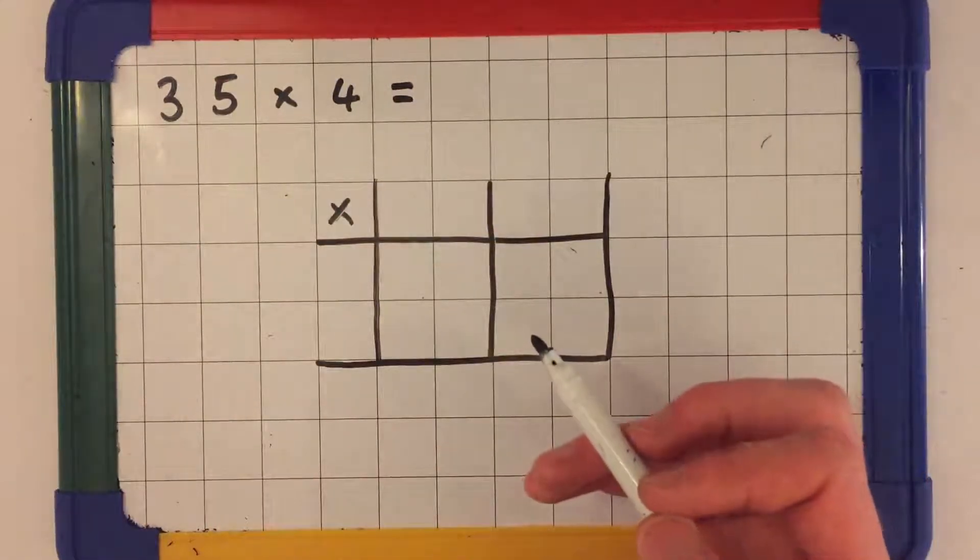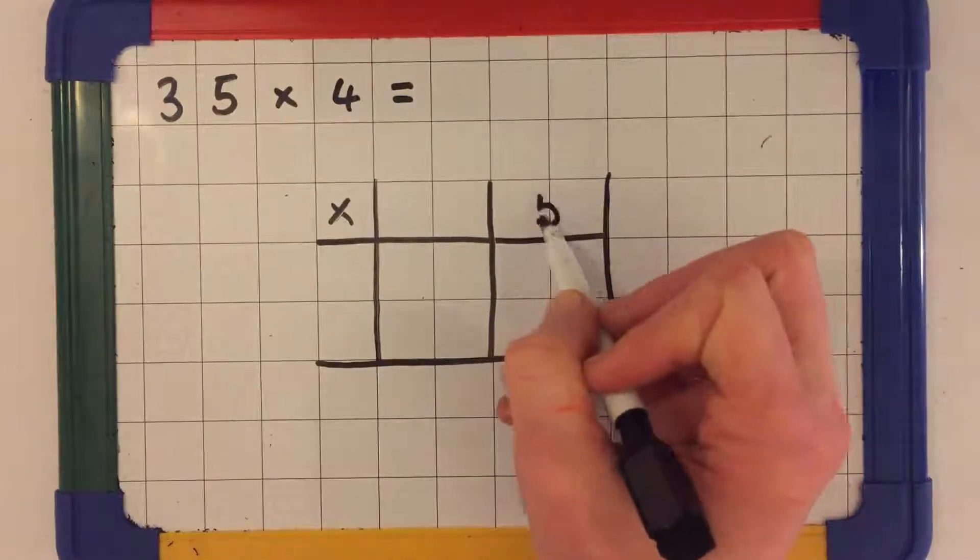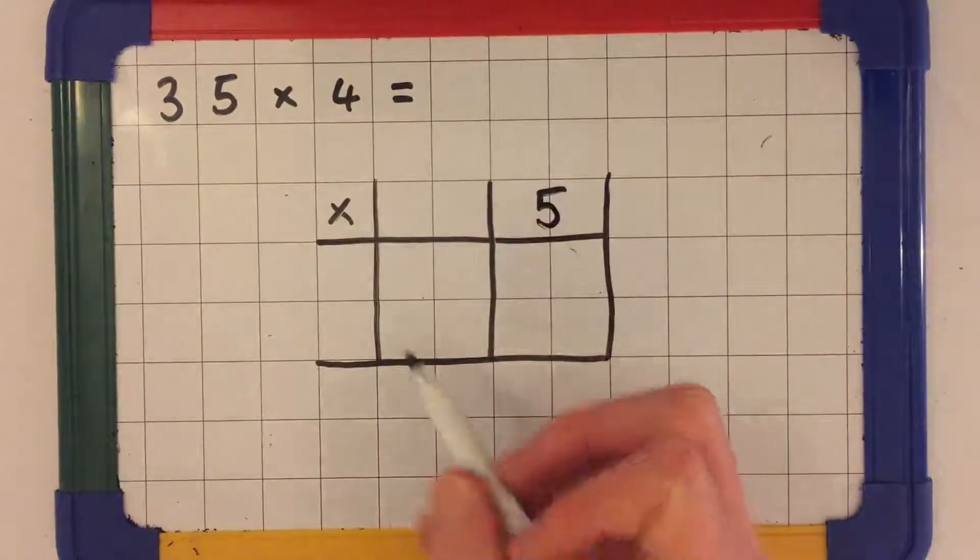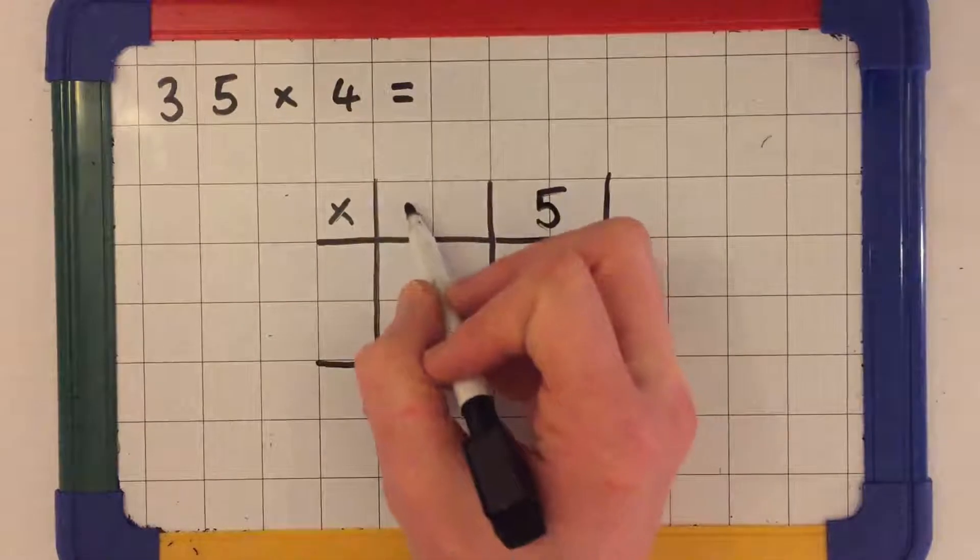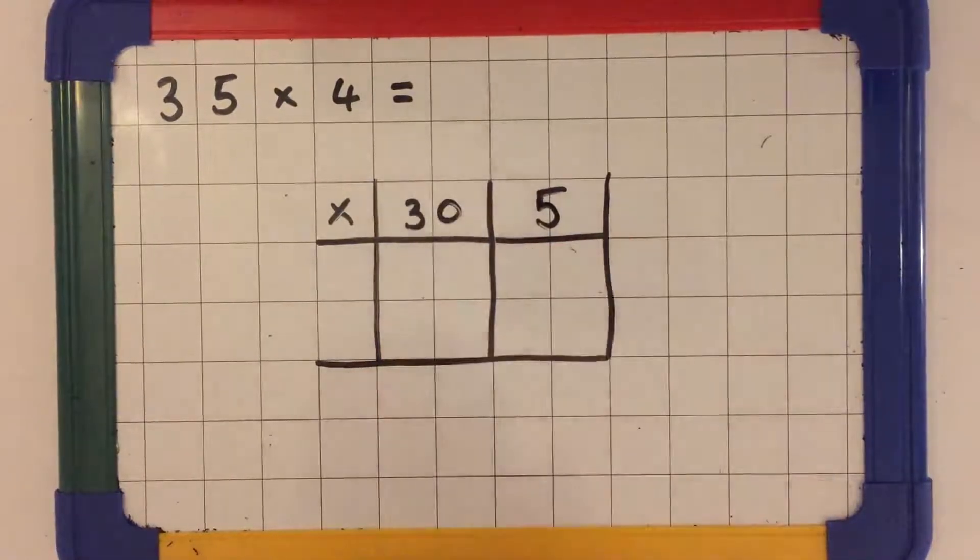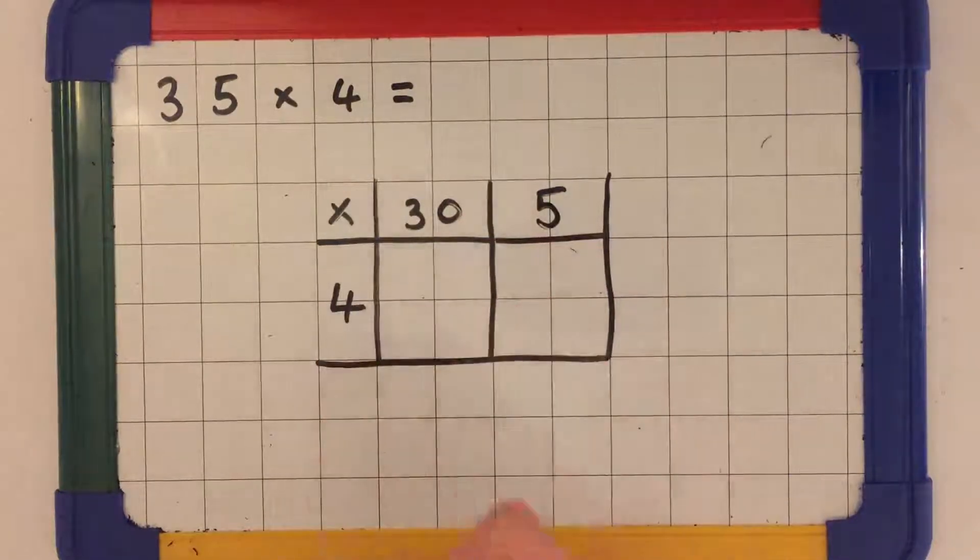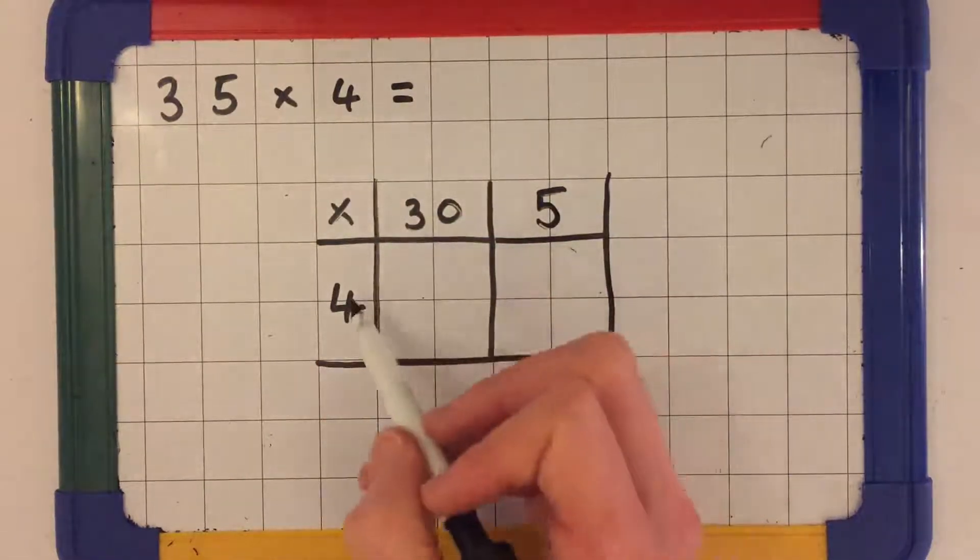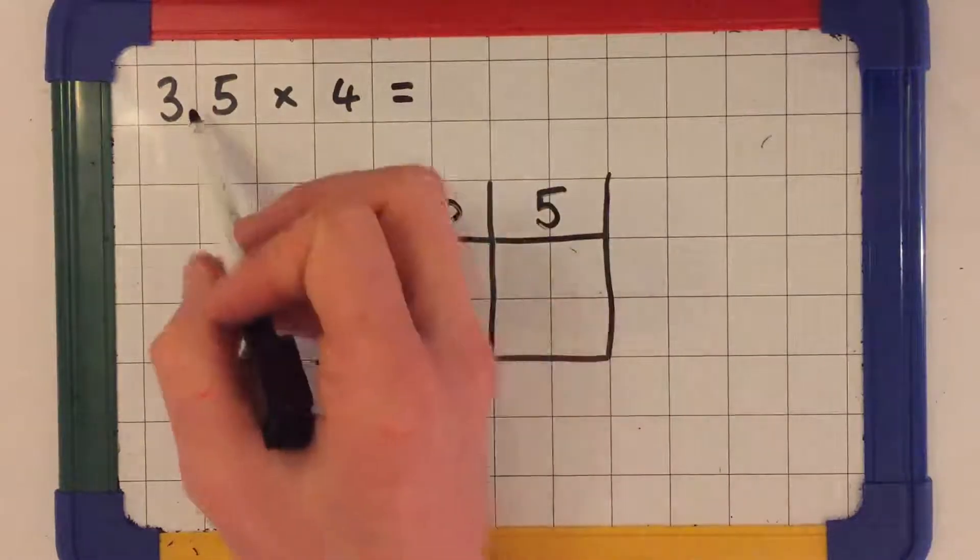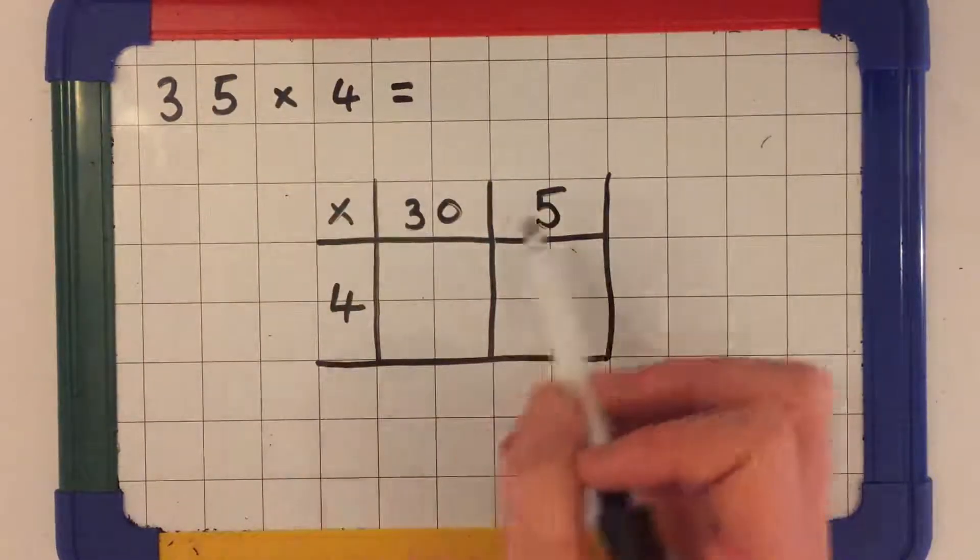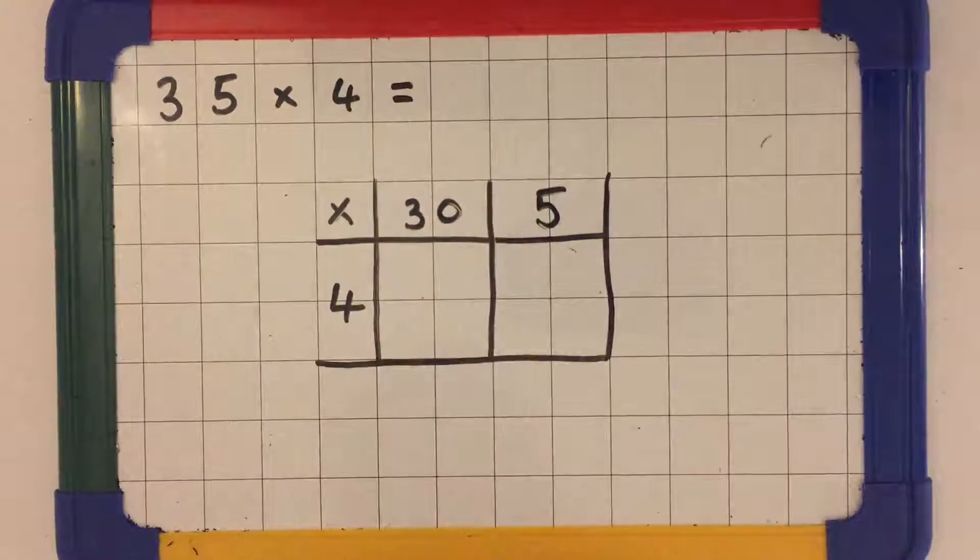35 has 5 ones and 3 tens or 30. We're multiplying 35 by 4 here. 30 comes from 35 and 5 comes from 35 too.